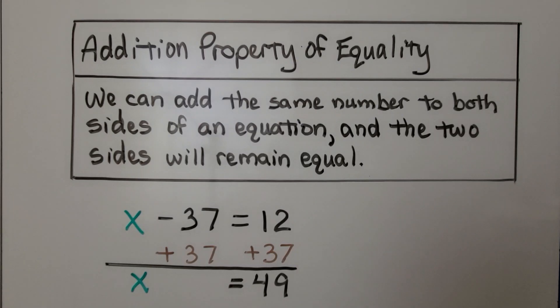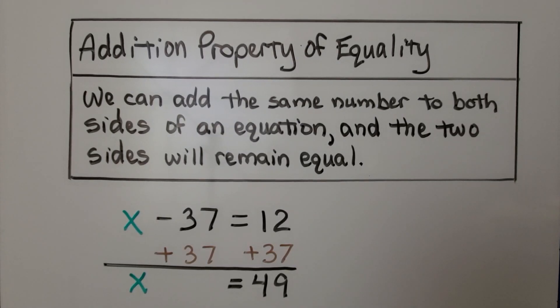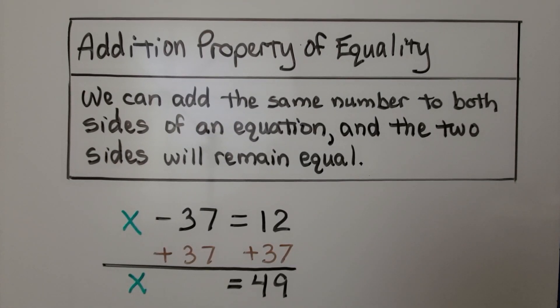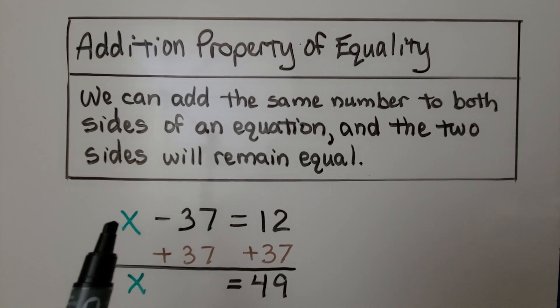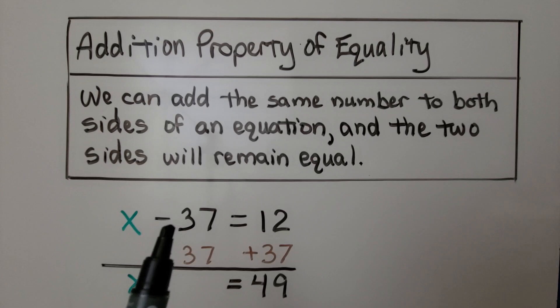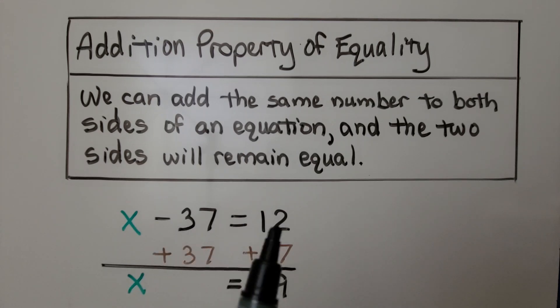This is the addition property of equality: we can add the same number to both sides of an equation and the two sides will remain equal. We have some number x minus 37 is equal to 12.